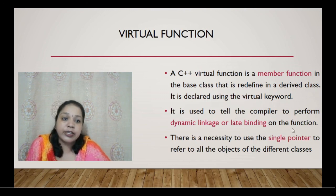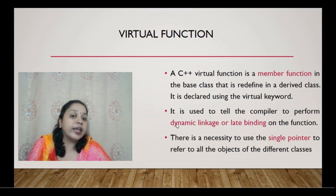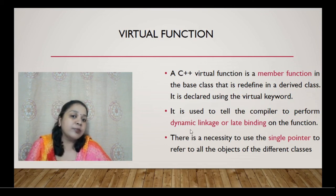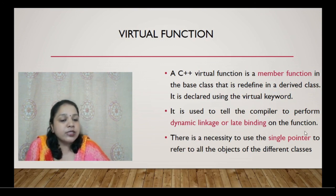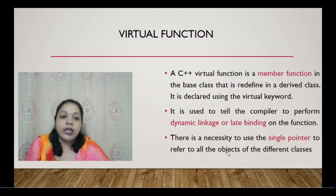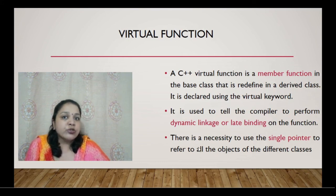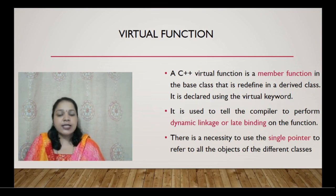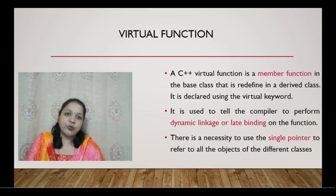The virtual keyword tells the compiler to perform dynamic linkage, also called late binding, on the function. This means at runtime, whichever derived class object is assigned, that derived class function is linked and executed. The key advantage is the ability to use a single pointer object to refer to all objects of different derived classes. This is the core advantage of virtual functions in runtime polymorphism.